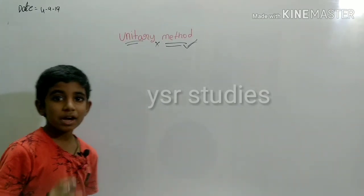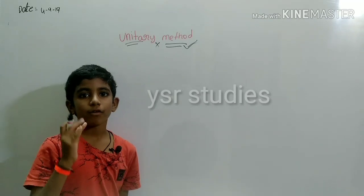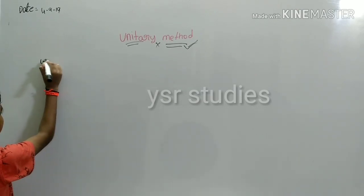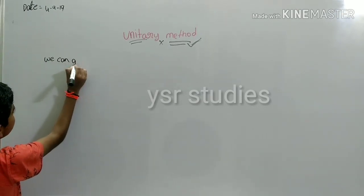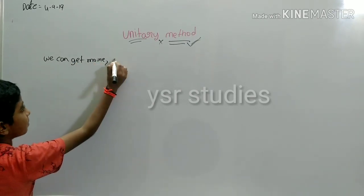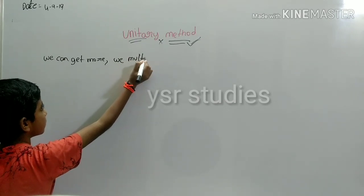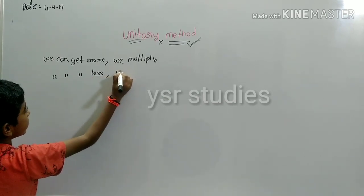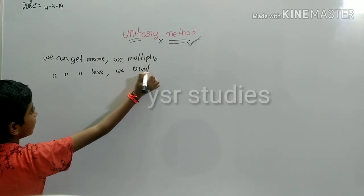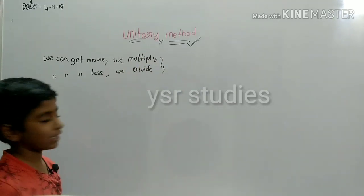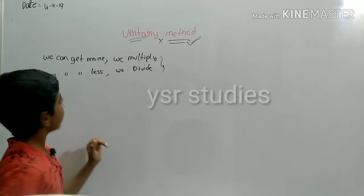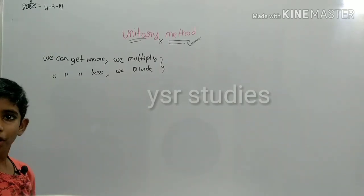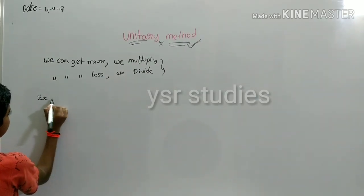Unitary method means we can find the value of one unit. If we want to get more, we multiply. If we want to get less, we divide. These two are the basic rules in the unitary method. Now we will see some examples.